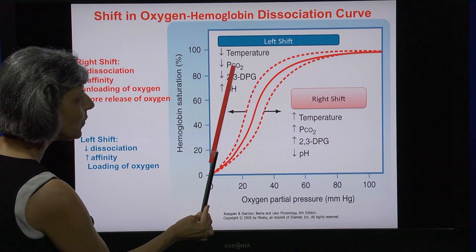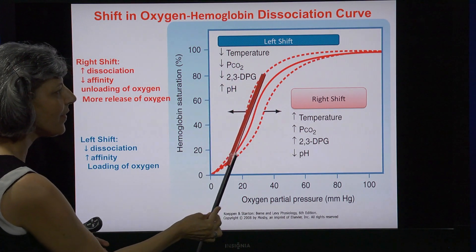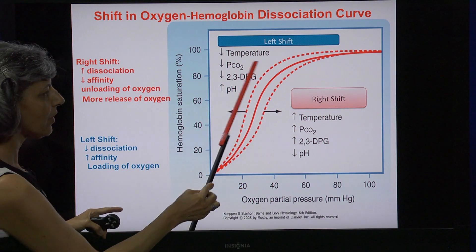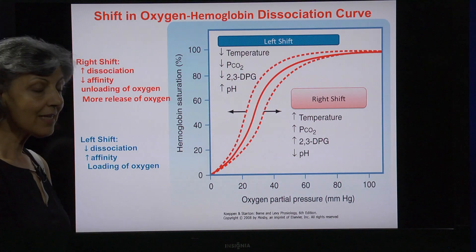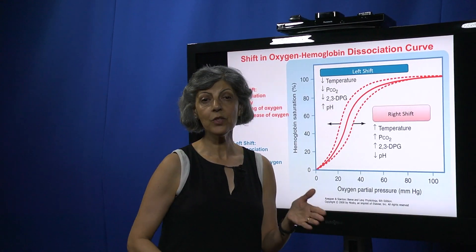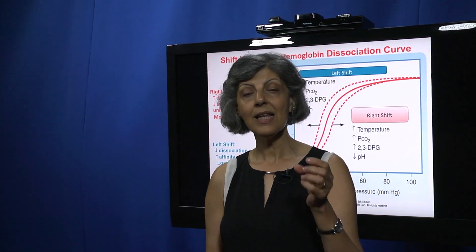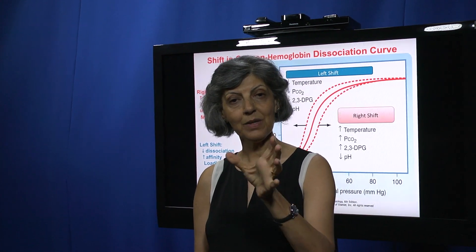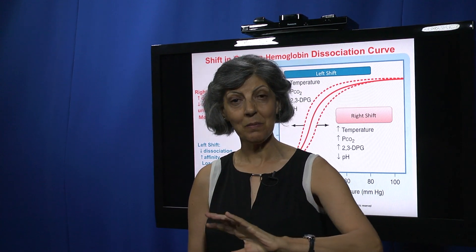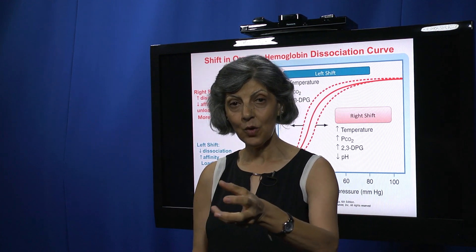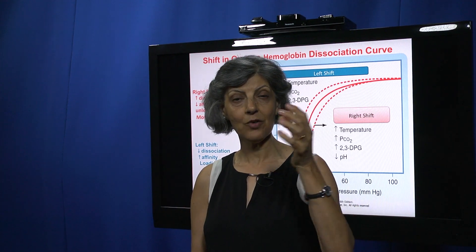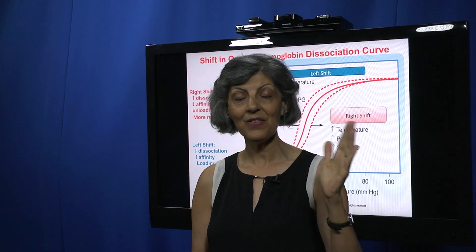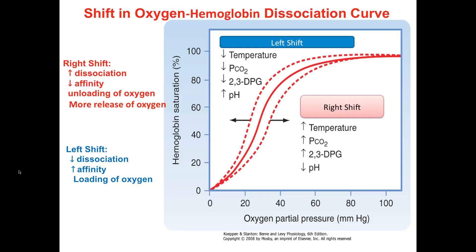With a left shift, the curve moves to the left side — there is more loading of oxygen than unloading. A clinical example of the left shift is normal fetal circulation. Fetal hemoglobin has a greater affinity for oxygen; since the fetus gets all its oxygen from the mother's blood hemoglobin, fetal hemoglobin pulls oxygen from the mother's blood, and the curve in the fetus is shifted towards the left.